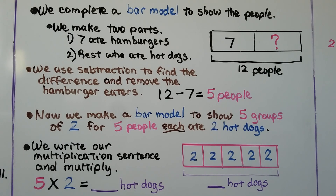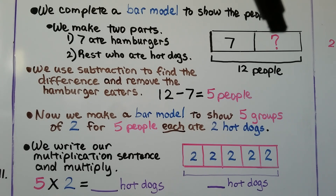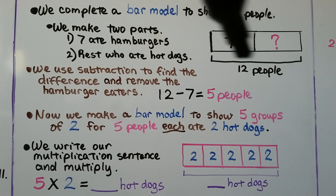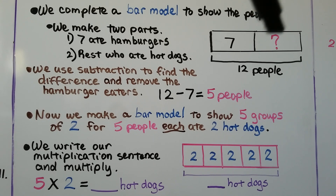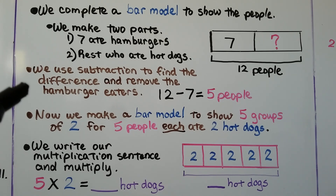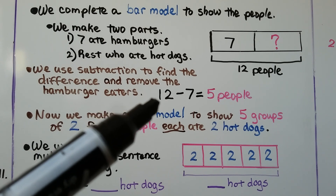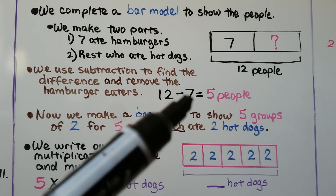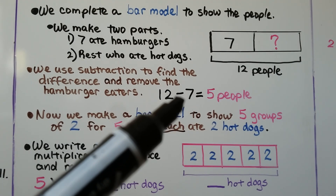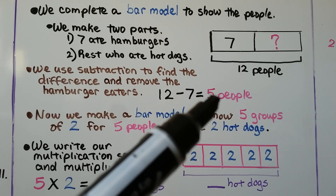We complete a bar model to show the people. We make two parts: one part is the seven people who ate hamburgers, and then we have the rest who ate hot dogs. There are twelve people in all, so the missing amount is the number of people who had hot dogs. We use subtraction to find the difference and remove the hamburger eaters: twelve minus seven means five people ate hot dogs.